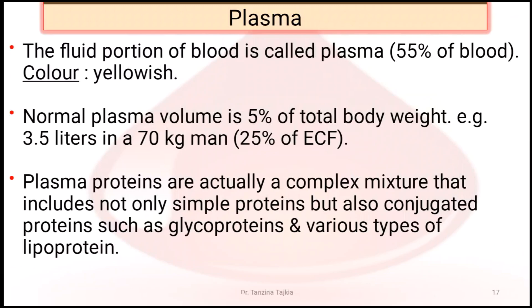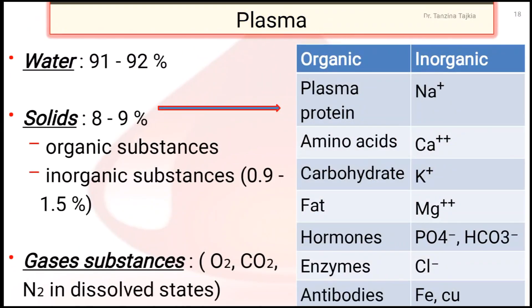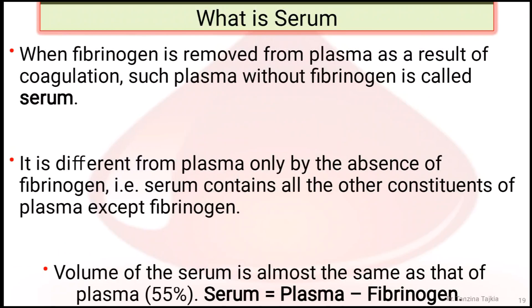In plasma there are plasma proteins, which are a complex mixture including not only simple proteins but also conjugated proteins such as glycoproteins and various types of lipoproteins. The composition of plasma is 91 to 92% water and 8 to 9% solids, including organic and inorganic substances. Gaseous substances such as oxygen, carbon dioxide, and nitrogen are present in dissolved state.